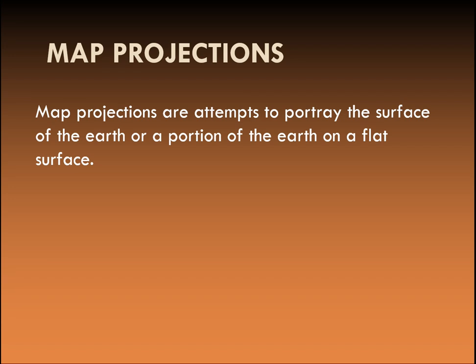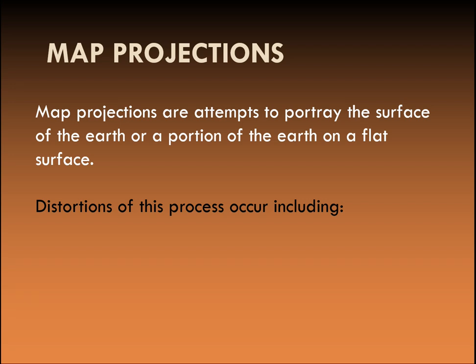So what we need to do is find a way to show what the earth looks like — the shapes on the earth — on a flat screen or a flat piece of paper. When we do this, it ends up having different distortions. Distance is one: one centimeter on the map is going to represent a different real-world distance depending on where you are on the map.